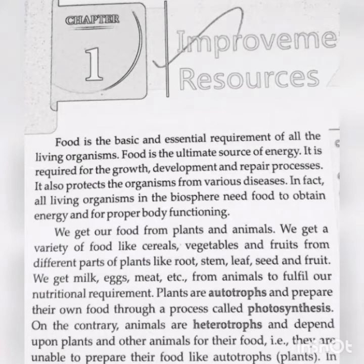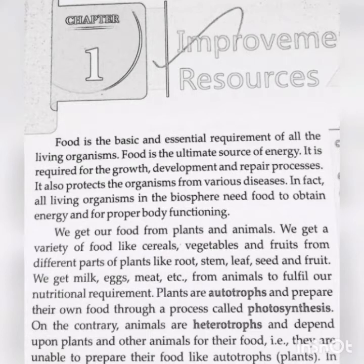We get a variety of food like cereals, vegetables and fruits from different parts of plants like roots, stem, leaf, seed and fruit. Plants are autotrophs and prepare their own food through a process called photosynthesis. The plant takes carbon dioxide and water in the presence of sunlight and chlorophyll, and gives out oxygen and glucose — this process is called photosynthesis.